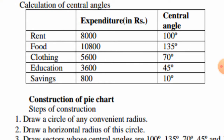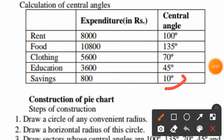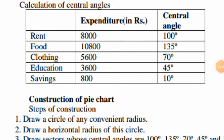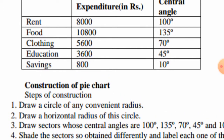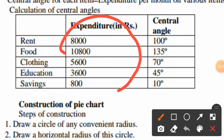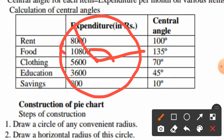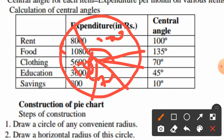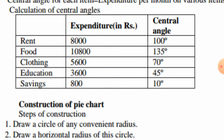For saving: 8,000 divided by 28,800 multiplied by 360 equals 10 degrees. After finding all central angles, we draw a circle, then a radius. On this radius we mark 100 degrees for rent, then 135 degrees for food, 70 degrees for clothing, 45 degrees for education, and 10 degrees for saving.